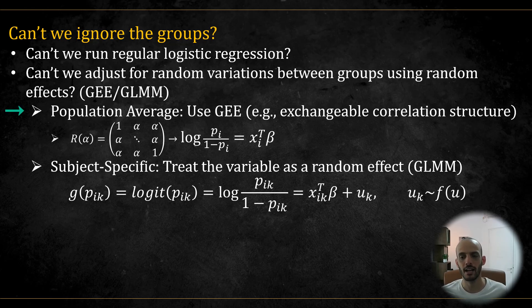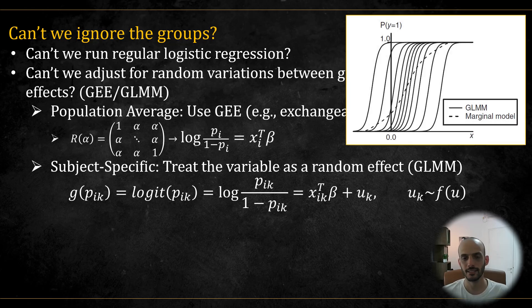In a nutshell both approaches allow us to account for possible correlations within groups. GEE is a marginal model. It corrects for the within group correlation in the likelihood equations but it estimates the global or population level betas. And GLMM is subject specific or strata specific meaning that the beta coefficients represent the subject specific effects. And here you can see an example with a random intercept added to the model. You can see the difference clearly in this famous graph from Agresti's book.